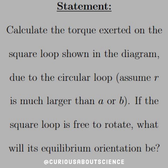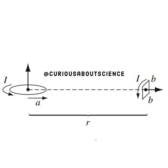To start, let's calculate the torque exerted on the square loop shown in the diagram due to the circular loop. Assume R is much larger than A or B, and if the square loop is free to rotate, what will its equilibrium orientation be? So we see the square loop to the left, current running such that it produces a magnetic field pointing up, and A pointing to the right. R is much larger than A or B, and we have a current on the square loop B such that the field is pointing to the right.